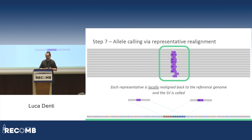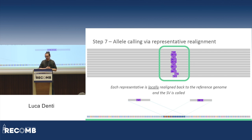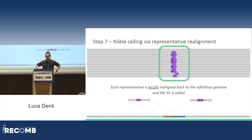The consensus should represent the potential portion of the haplotype — it's more or less an assembly, but not quite. Then in the last step, we call the variations by realigning back the consensus to the reference genome using local alignment. Since we know the locus and the potential string of the haplotype, we can locally realign each consensus back to the reference genome and then call the structural variation.